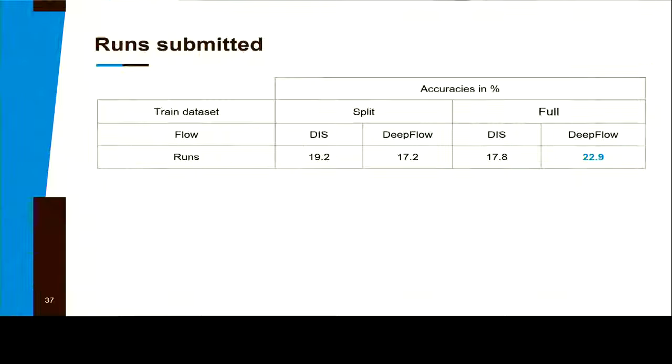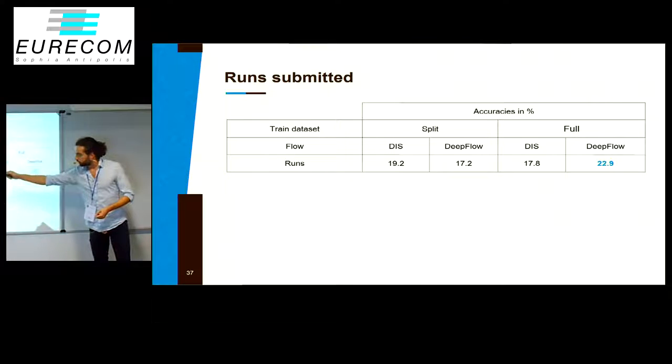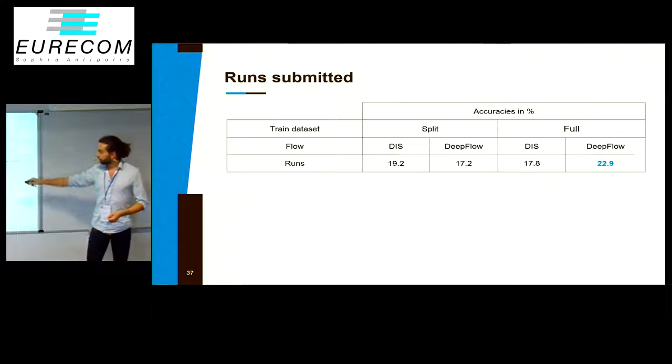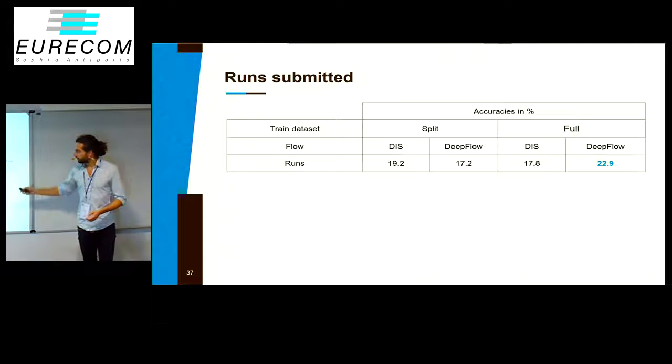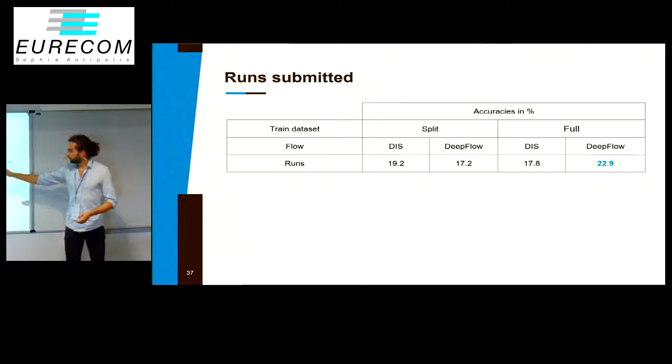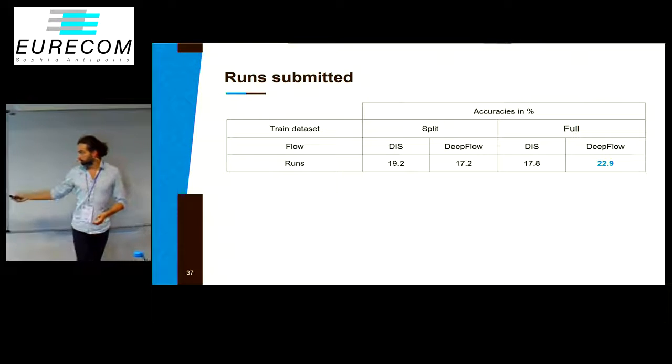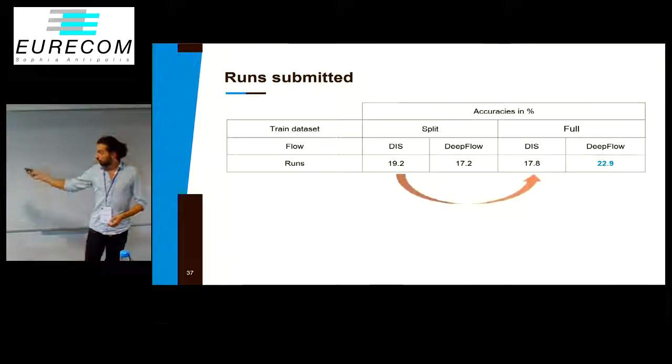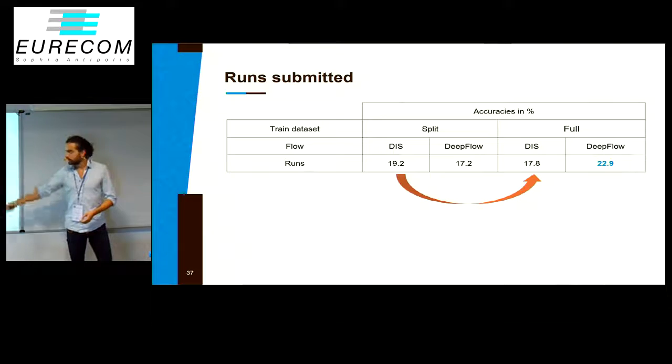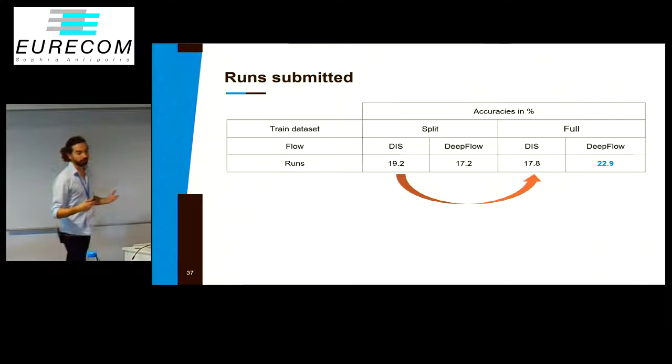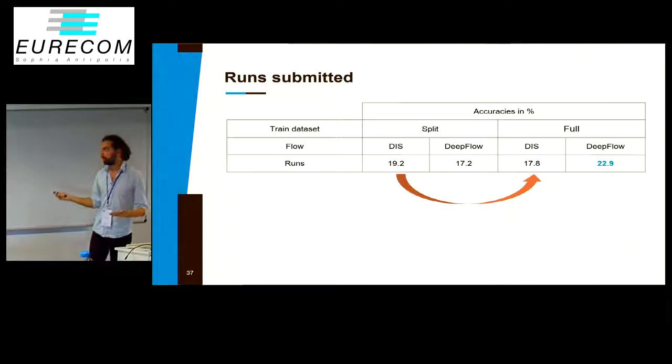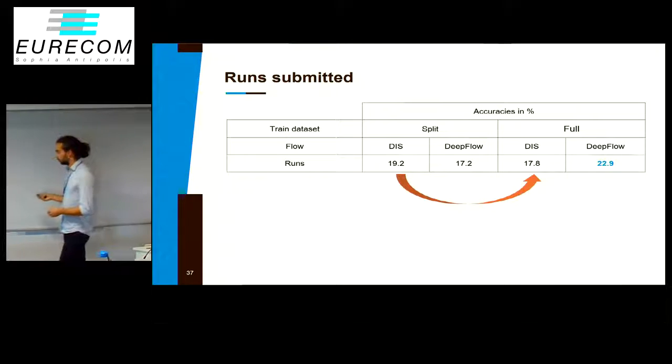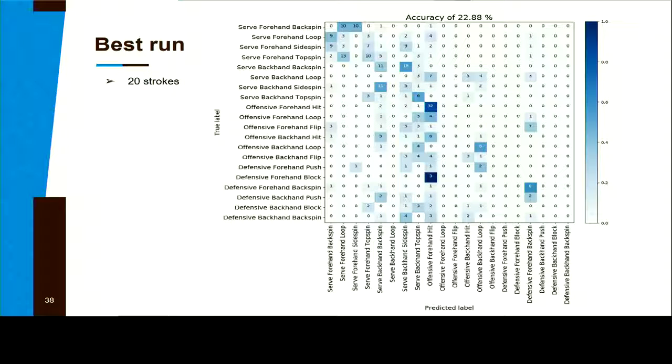For the runs submitted, for the split, DIS obtained better results, but when using the full one, Deep Flow obtained better results. We actually increased our score to 25%, and we were all surprised to see the score decreasing when we used the full data set. I think it's just bad luck during training.